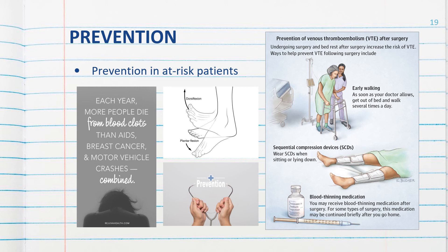Apply compression stockings and pneumatic compression devices when appropriate. Instruct patients to avoid crossing their legs when laying in bed or sitting. Inquire about possible prophylactic heparin or warfarin therapy for patients undergoing orthopedic surgery or other high-risk procedures. Frequently assess IV sites and change the site and catheter as dictated by agency protocol or if there is any evidence of local inflammation.